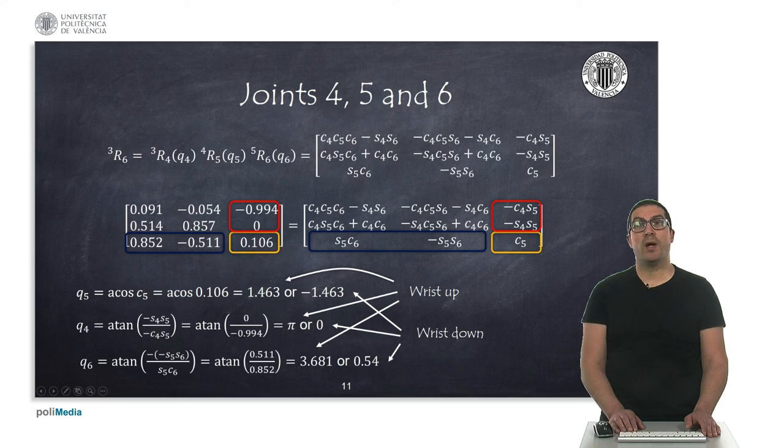We first realize that the fifth joint value can be computed from the element of the rotation matrix highlighted in red, the one corresponding to the third row and third column of the rotation matrix. On the other hand, the values for joints 4 and 6 can be obtained from the elements of the third column and row respectively, painted in red and blue.